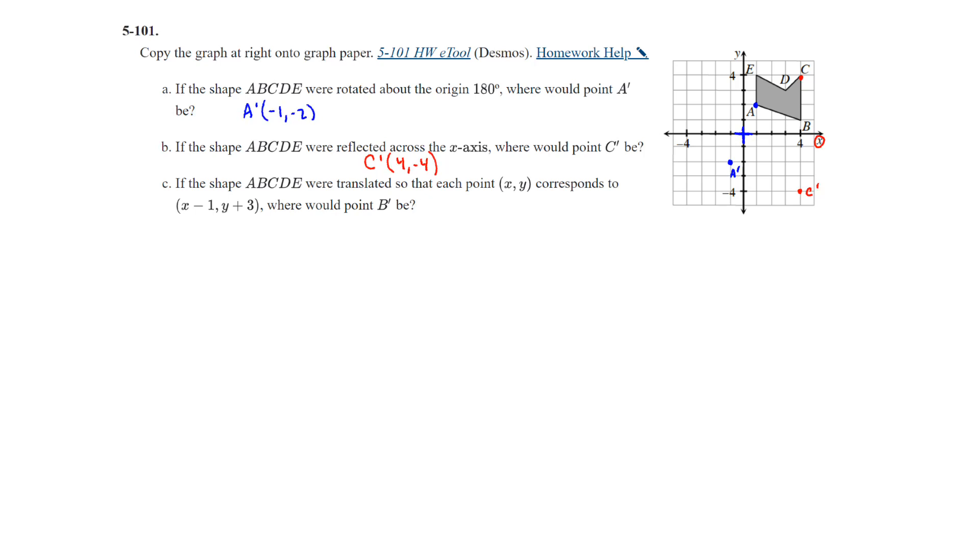And then the last one, if the shape ABCD were translated so that each point corresponds to x-1, comma, y+3, where would point B prime be? Now when you subtract 1, that means you're going to the left 1 unit, and when you add 3 on the y, that just means you're going up 3 units. So we could do it with all 5 points, but it just wants to know B, so we'll focus on B. Now let's go ahead and go left 1, and then up 3, and that looks like it would be right up here, B prime, and that would be at 3, comma, 4. So B prime would be at 3, comma, 4.